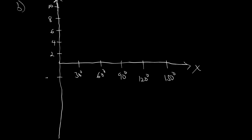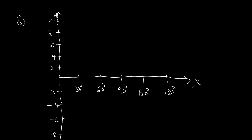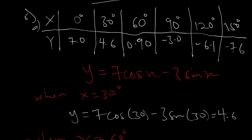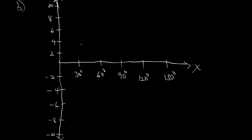Then on the negative side we have −2, −4, −6, −8, and −10. When we plot our points: when x = 0, y = 7, so 7 would be here. When x = 30, y = 4.6, so 4.6 would be somewhere here. When x = 60, y = 0.90, so 0.90 will be somewhere here.